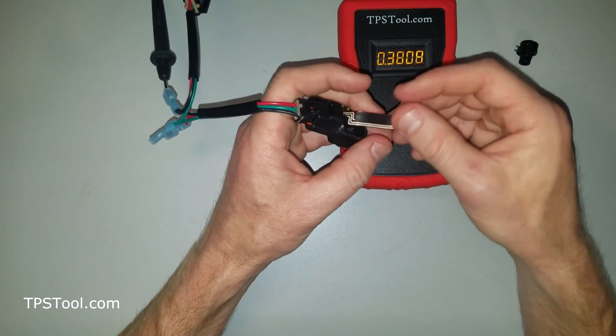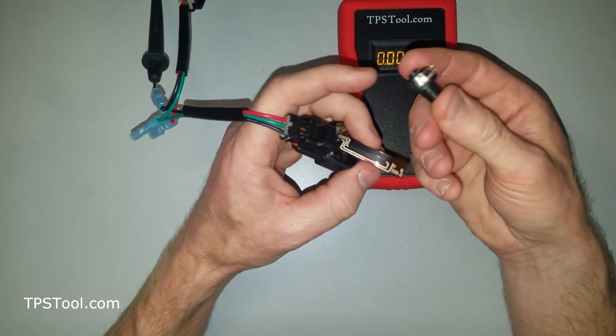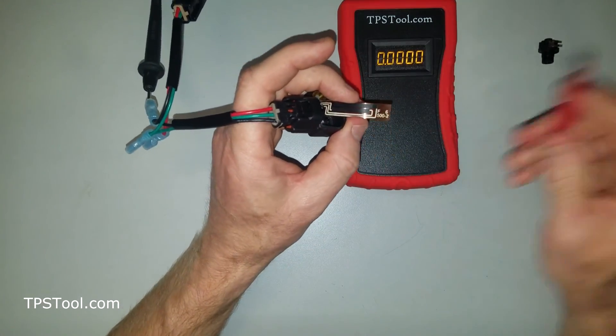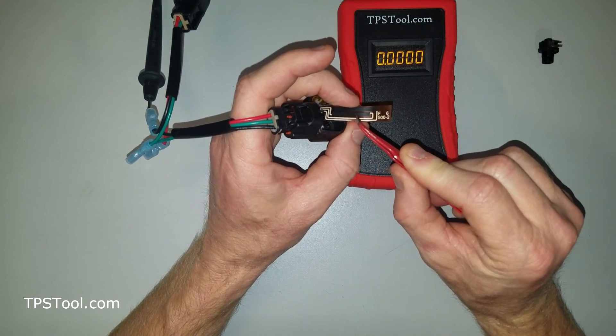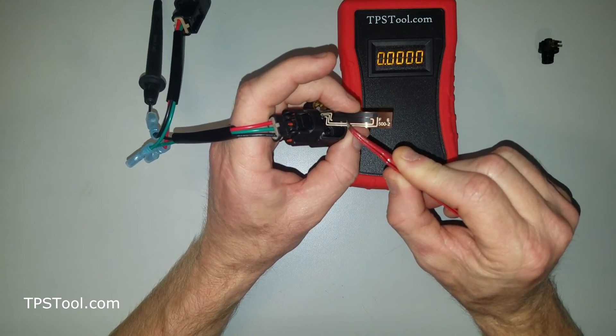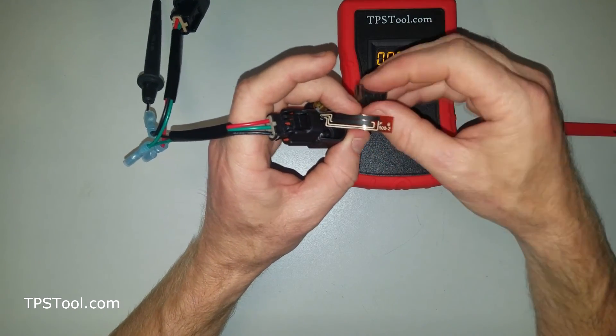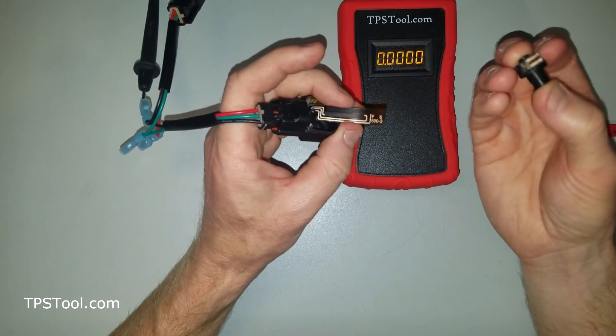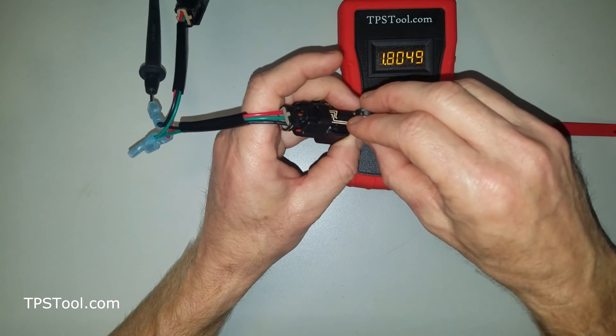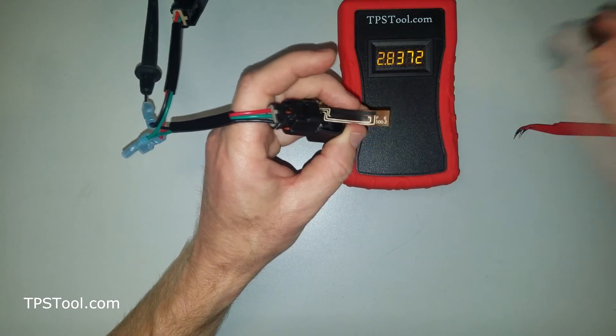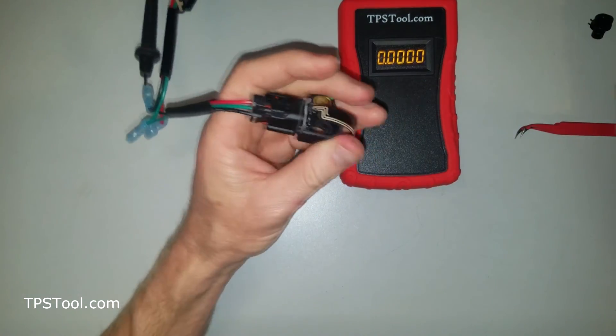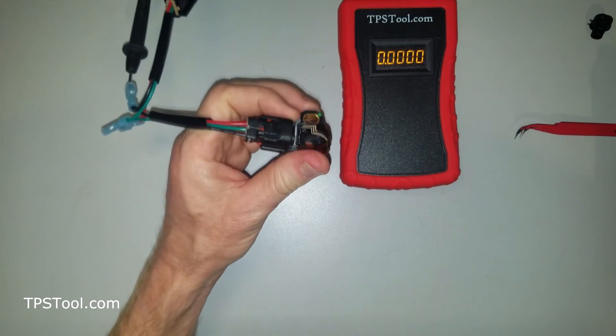So when a TPS goes bad, usually what happens is one of these wipers, something will happen to it or something along this conductor will either get worn out and chip off or maybe it'll get some dirt in there and it won't conduct all the time. These wipers will touch the dirt and they won't make good contact or something like that. But I thought you guys would find this interesting that it's just that simple. It's not complicated at all. And I hope you enjoyed this. Thanks. Bye-bye.